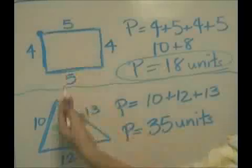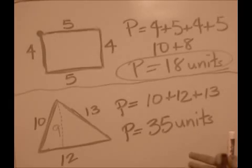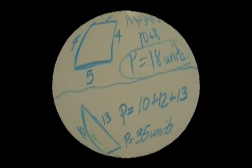And for simple figures like this, basically the only thing you need to do to find the perimeter is add the outside lengths.